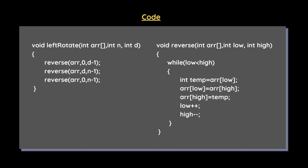Inside the reverse function, there is a while loop with the condition low less than high — the loop iterates as long as low is less than high. Inside the loop, we swap the elements at index low and index high. After each iteration, low is incremented by 1 and high is decremented by 1. When low becomes greater than high, the loop stops. This solves the entire problem in O(n) time and O(1) auxiliary space.